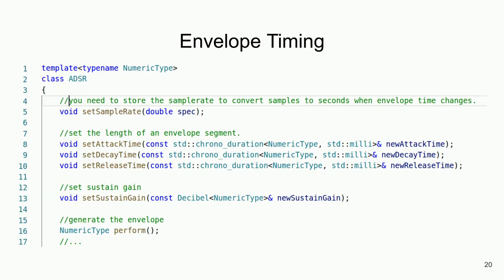Here's how to make a simple ADSR class with this. It's just an example declaration for a class where you can set the sample rate, attack time, decay time, release time, and sustain gain. The nice thing is you don't have to worry about whether you're passing in seconds or milliseconds — the type encodes that information. Even if the duration you pass is different from the duration the object wants to operate on, it will automatically convert between the two, so you still get the correct behavior.